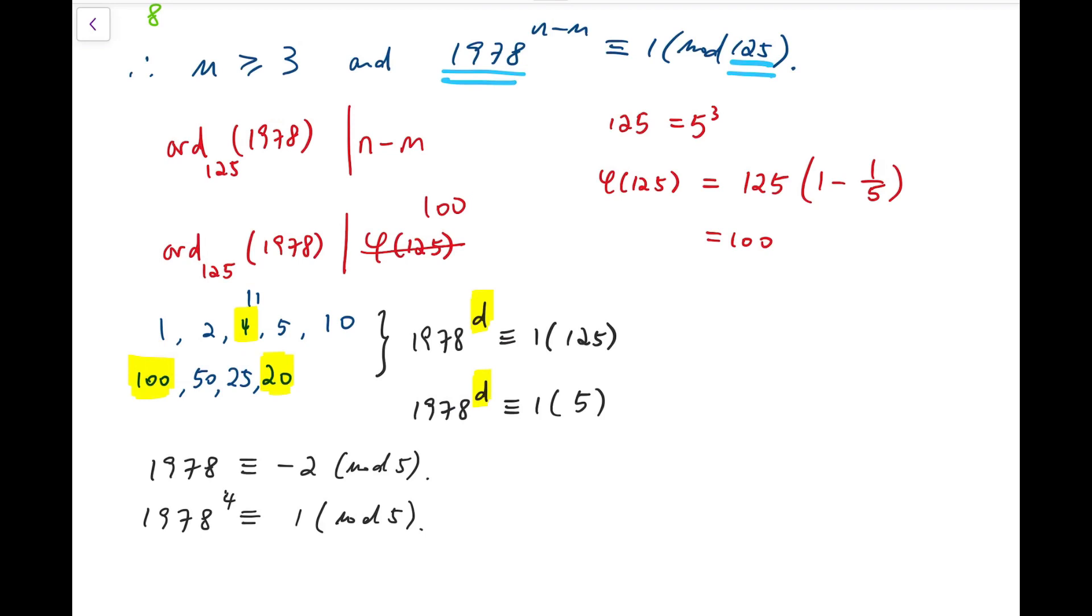The reason that I can restrict this to only multiples of 4, is that if I bring 1978 to the power that is not a multiple of 4, then we can't even have 1 mod 5, not to mention 1 mod 125. So, it remains to consider these 3 values 4, 20, and 100.